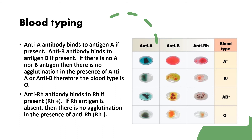This is demonstrated visually: agglutination in the presence of anti-A and anti-Rh but none with anti-B means blood type A positive. Agglutination with anti-B and anti-Rh but none with anti-A means B positive. Agglutination with anti-A, anti-B, and anti-Rh means AB positive. And if there's no agglutination in any of the samples, the blood type is O negative.